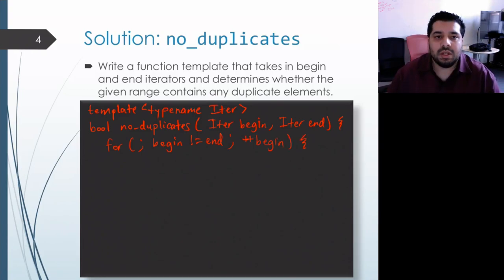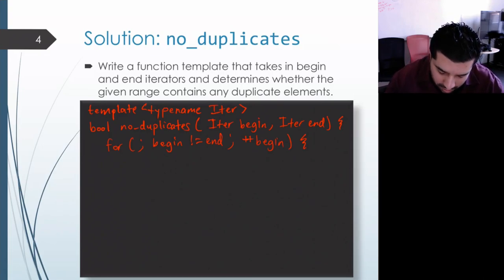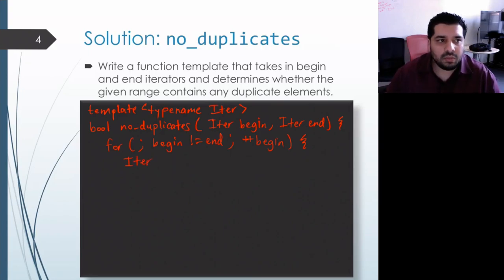So that takes care of our outer loop. Now for our inner loop we do need a separate iterator variable because it's going to be moving independently of the outer loop and we want it to start off at the next element over from begin. Now with our iterators we don't actually have the ability to add one to an iterator.